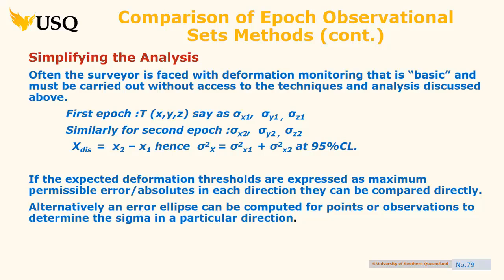You can actually do this by direct measurement. In some books this is called the sets measurement method. In other words, if you set up on a control point and measure everything else the same way, then come back next month and do the same, you could do a least squares adjustment of the whole thing, but you could also just compare the angles and distances you got from each epoch. There are simpler ways than doing a full-blown adjustment.